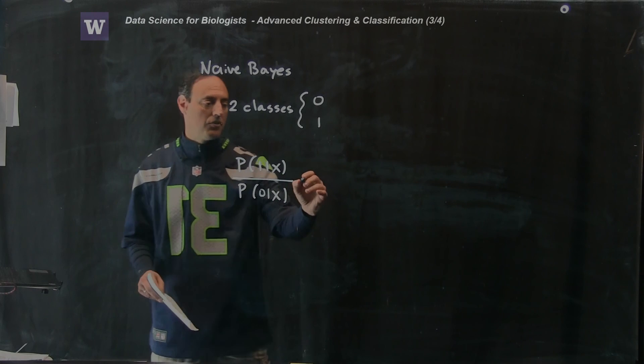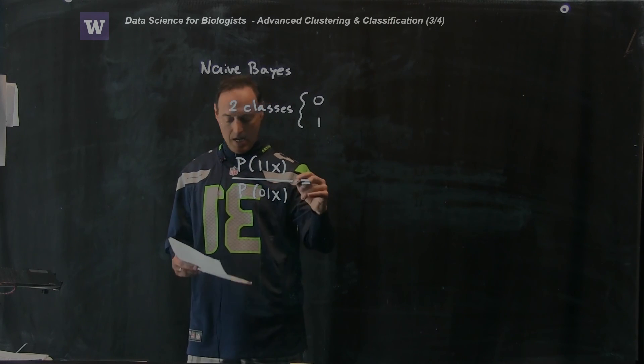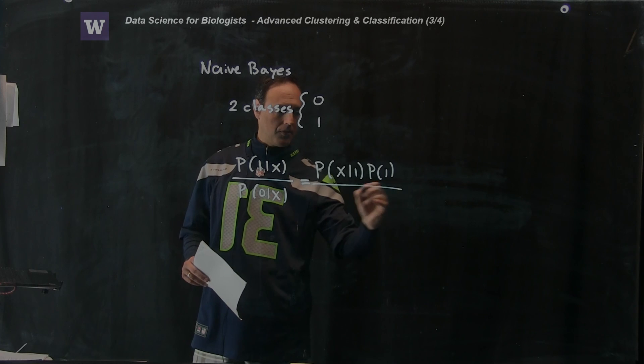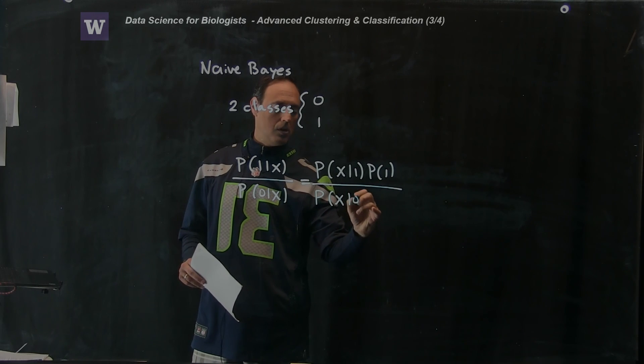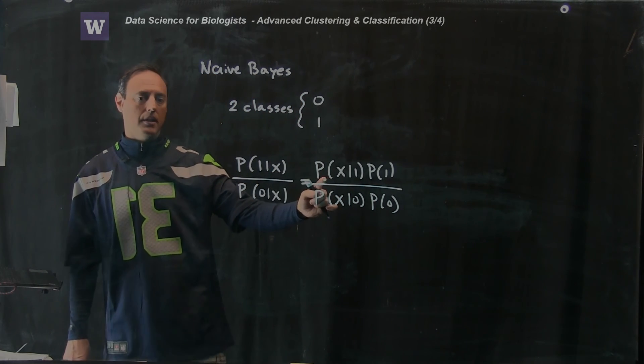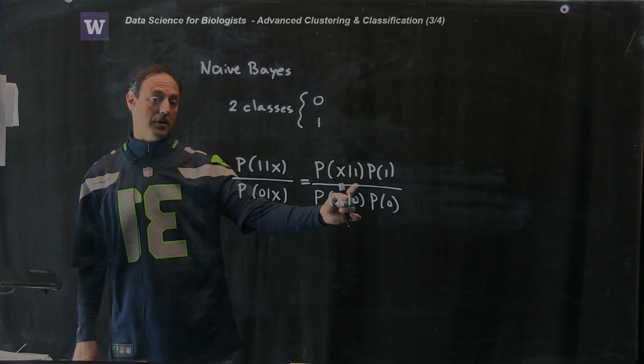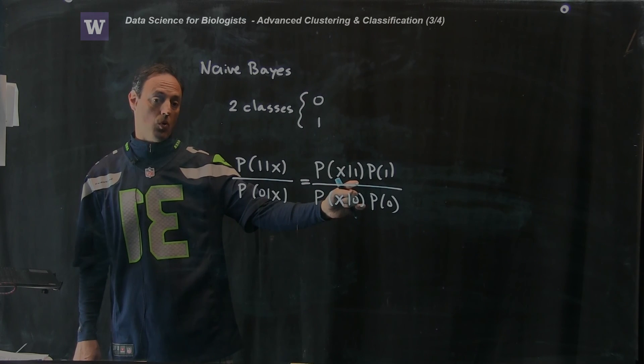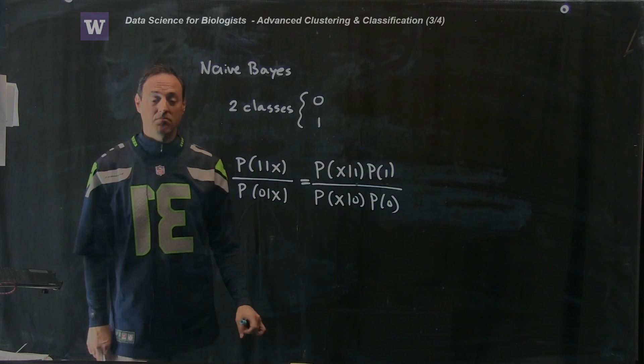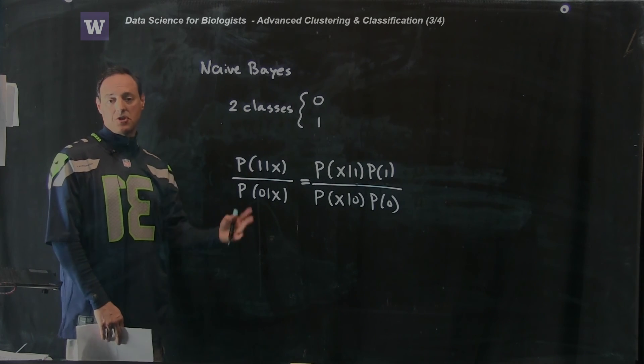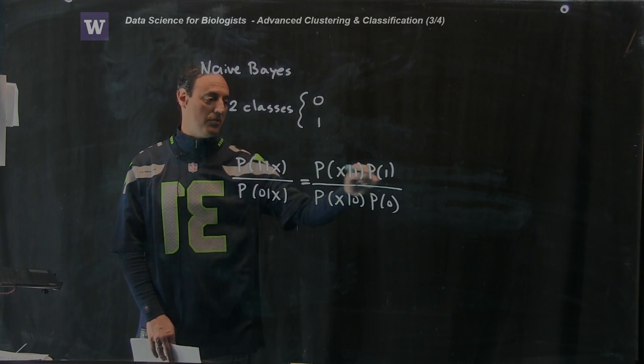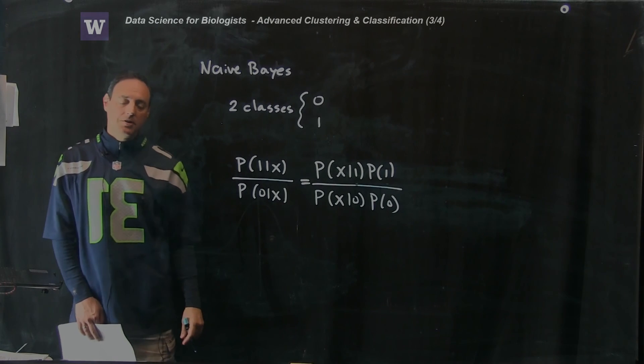So what Bayes rule says is I can rewrite this as the following. Probability of 1 given x is the same as the probability of x being a state given that it's 1, times the probability distribution of a 1. So this is just the simple use of Bayes rule. Bayes rule is basically this equals these two.